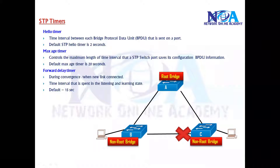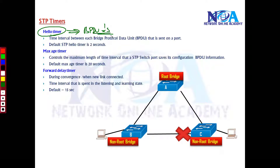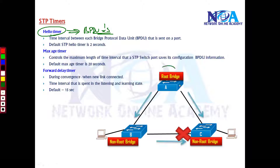The next thing we will try to understand is the timers. In Spanning Tree we have three types of timers. The first one is the Hello Timer, also called BPDU Hellos. These hellos are sent every two seconds between the switches. Typically the root bridge will be sending this hello to the next switch every two seconds.